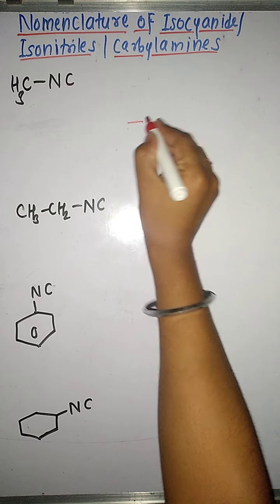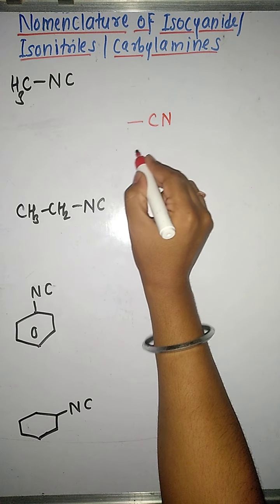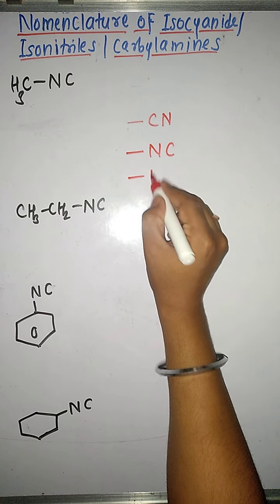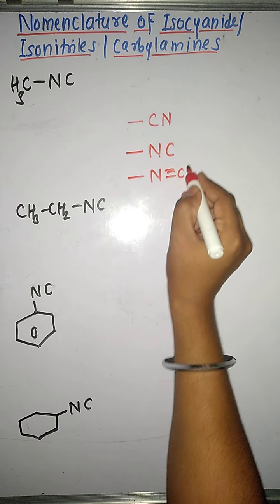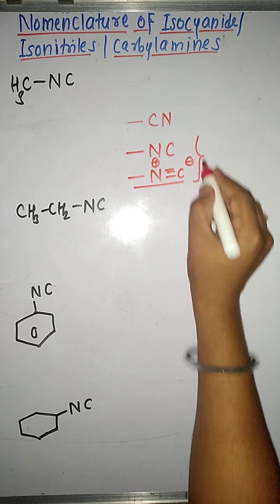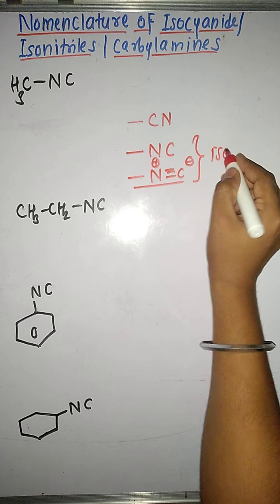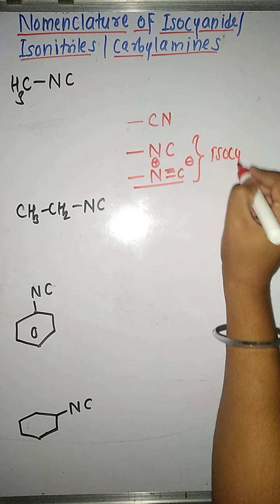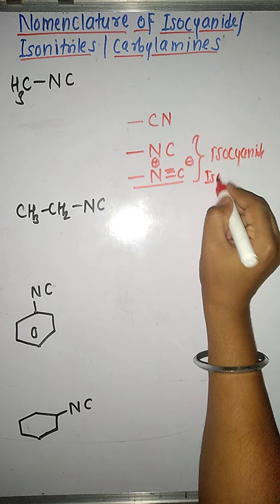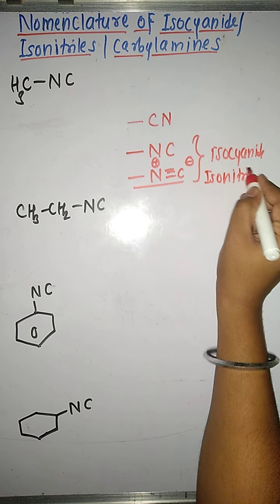The functional group in cyanide is -CN, but isocyanide is -NC. We write it as -N≡C⁻ N⁺. These functional groups are for isocyanides, which are also called isonitriles or carbilamines.